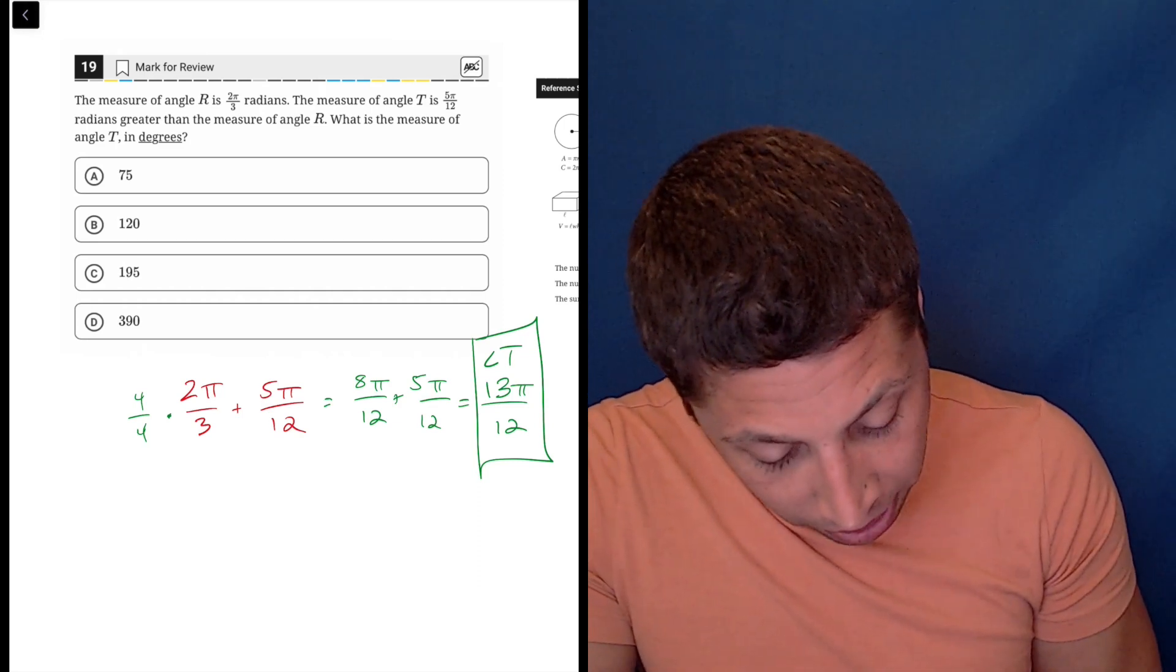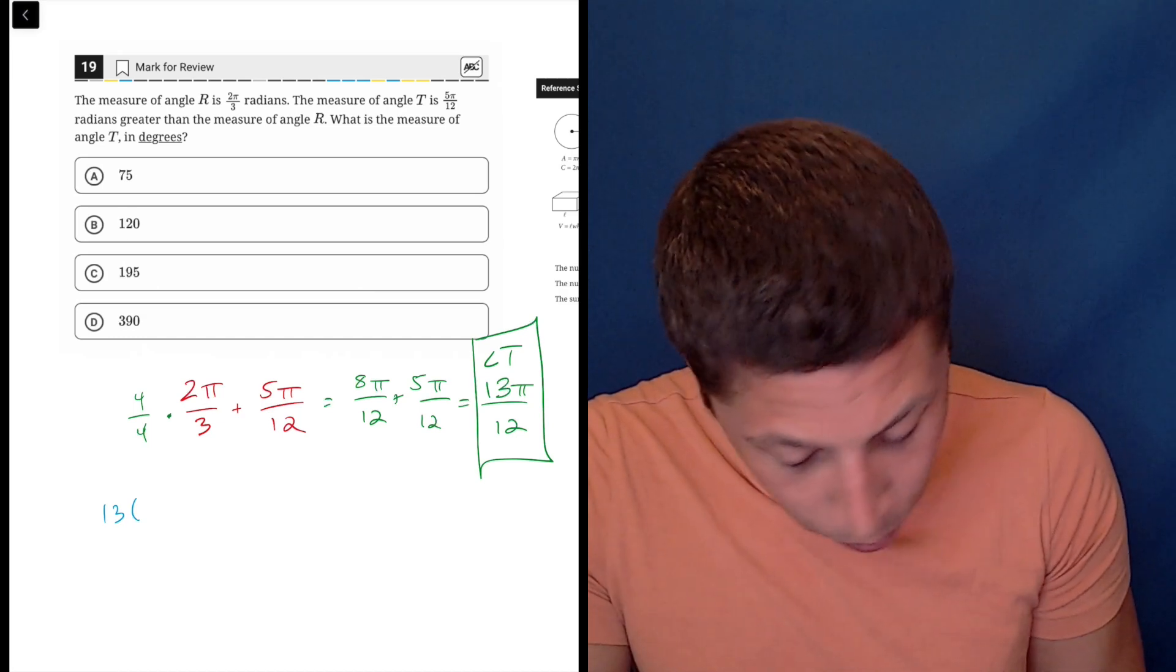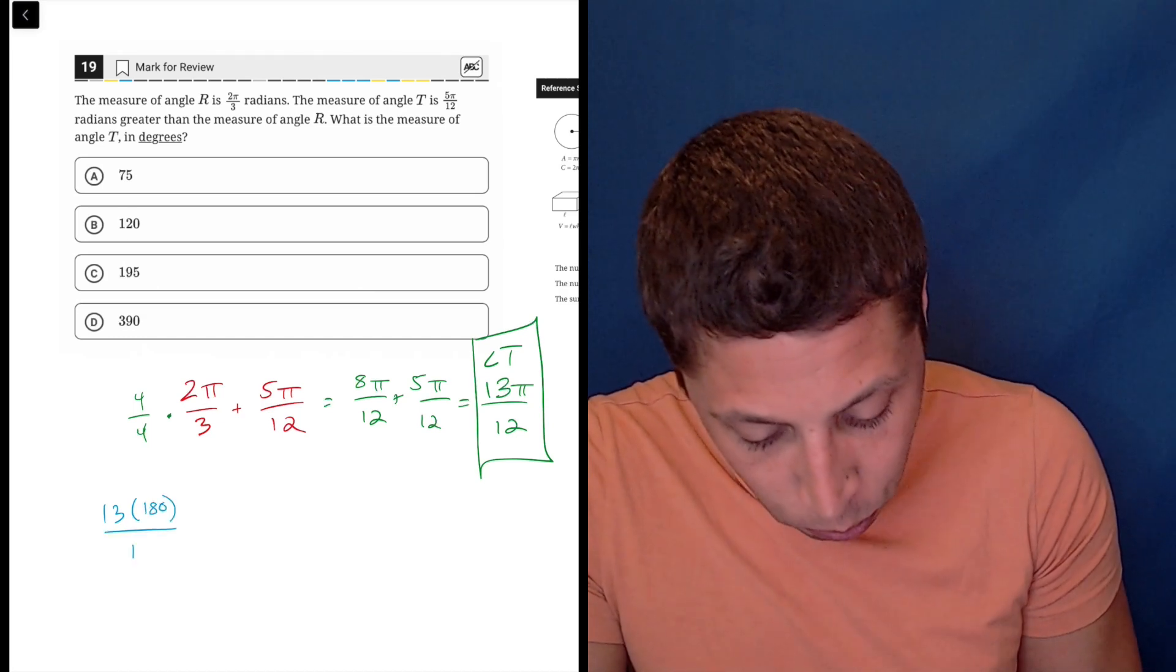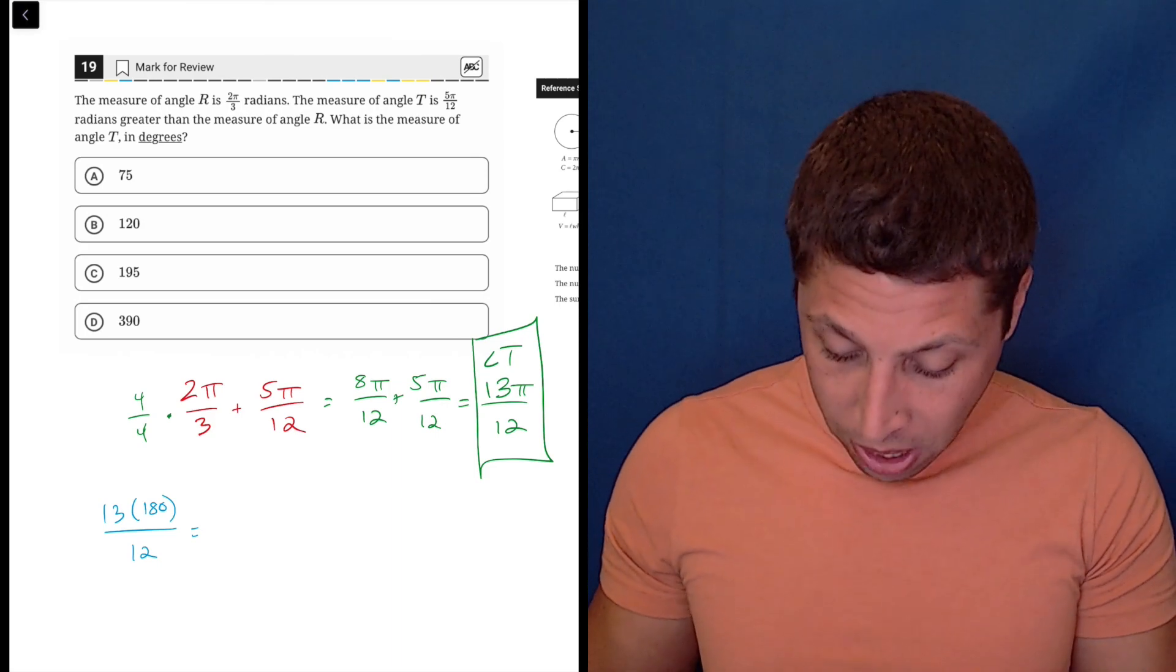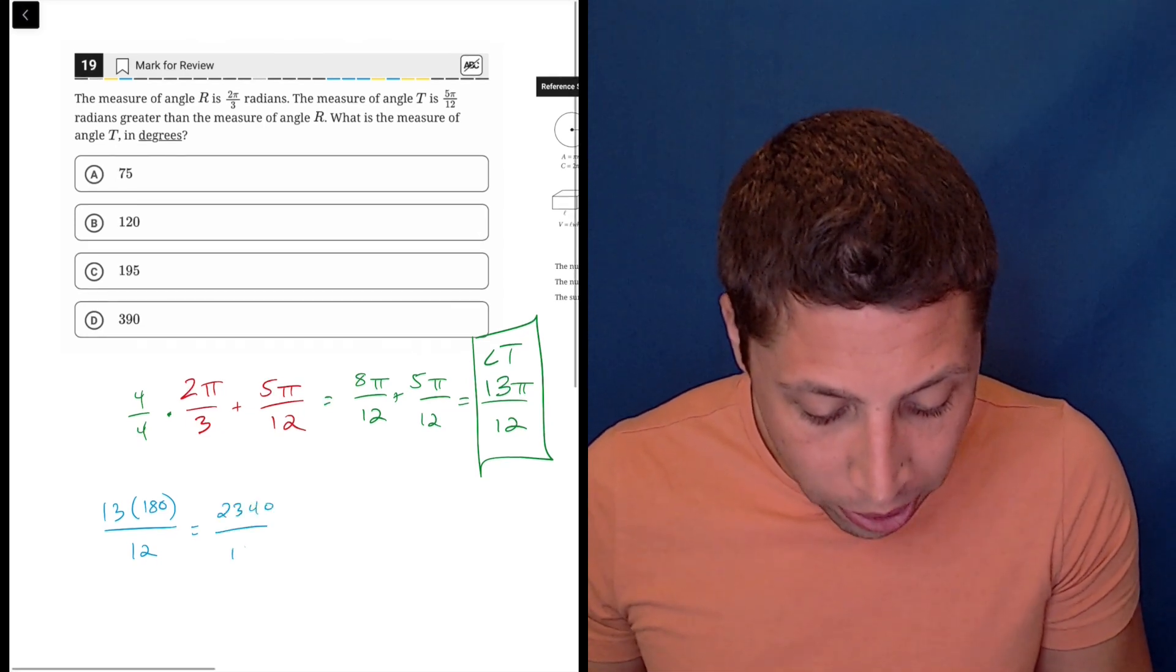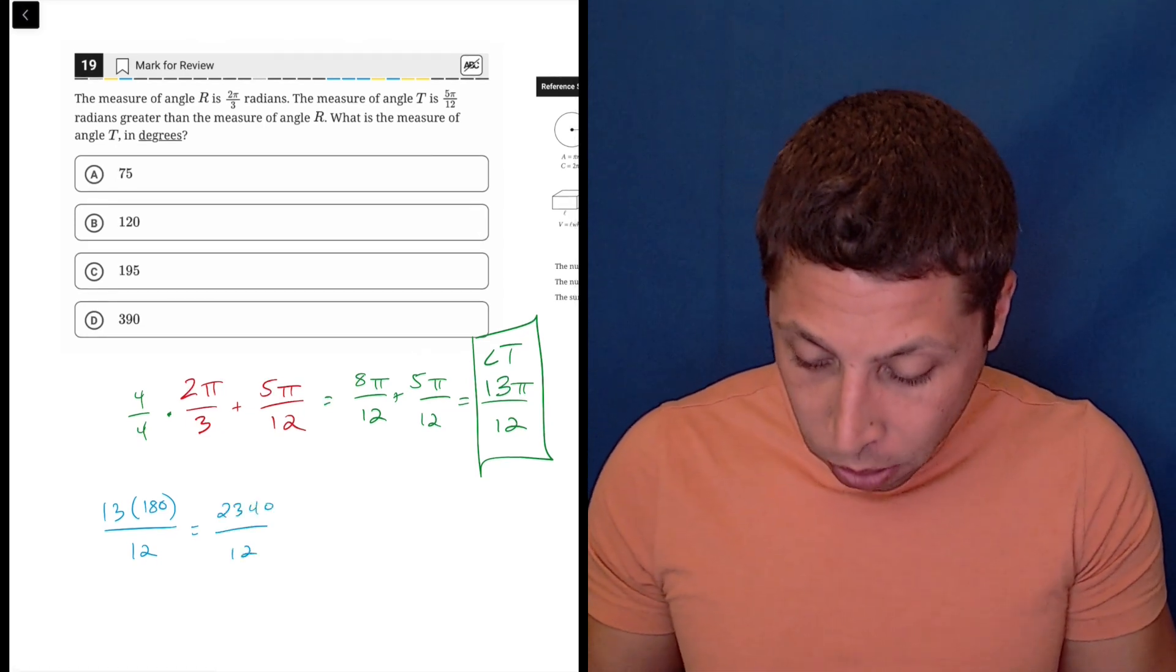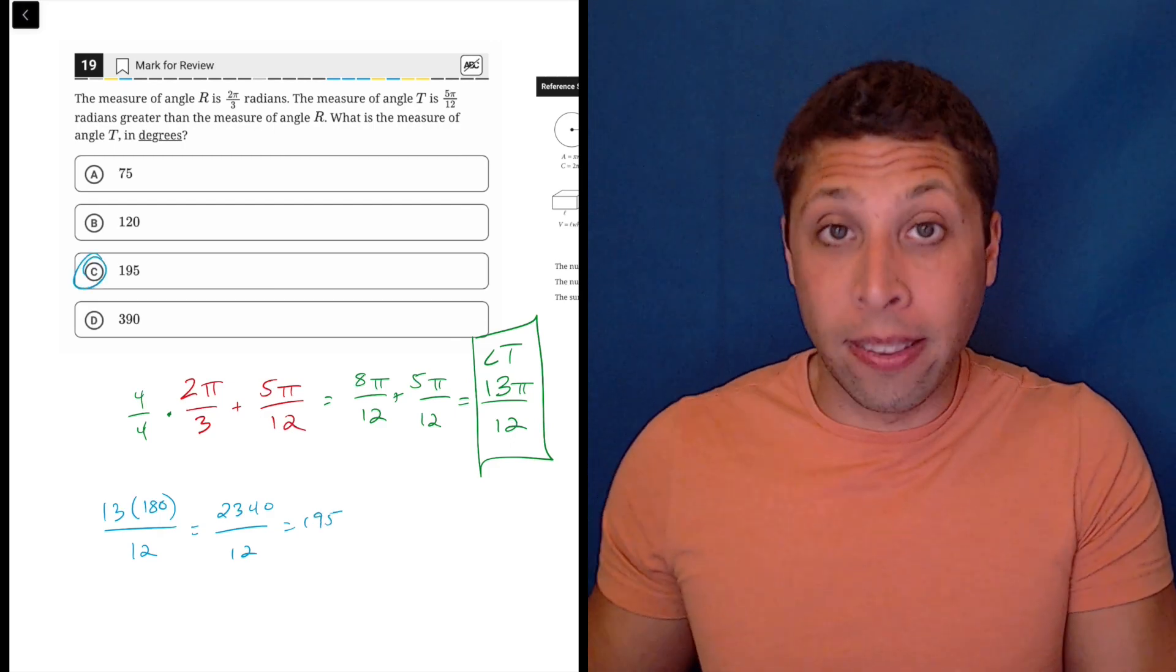So we can do that. Let me show you how that would work. We would take the 13π/12 and just turn that into 13 × 180/12. And here my regular calculator would take over. 13 × 180 is 2340 and then divide that by 12 and we get 195, choice C. And that is the answer.